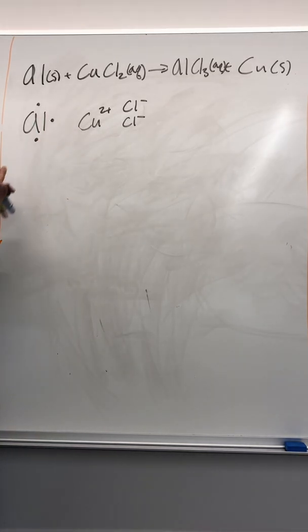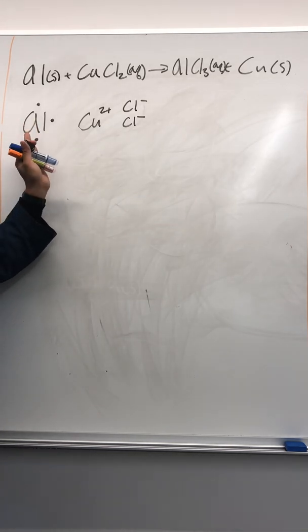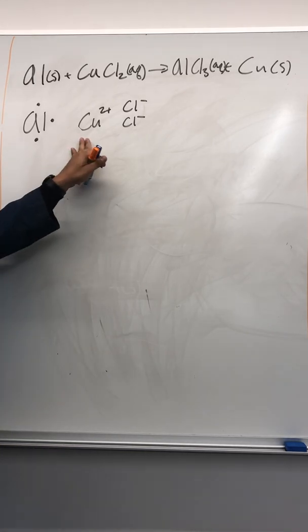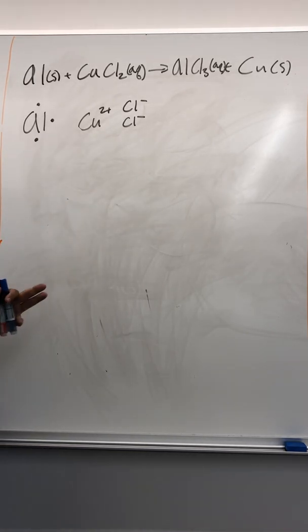Aluminum. Actually, when you have aluminum and copper together, there's this thing called the activity series that says aluminum actually is a little stronger than copper and it wants to form a 3 plus ion more than copper. Copper is pretty stable right now, but aluminum is kind of like here.